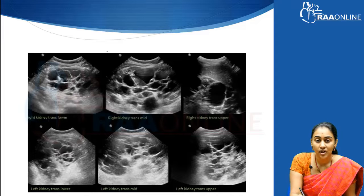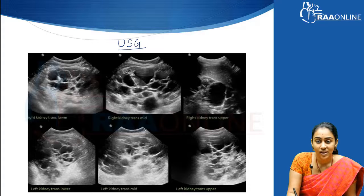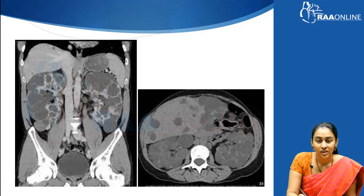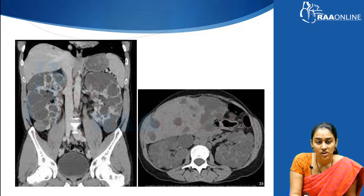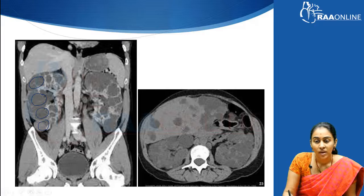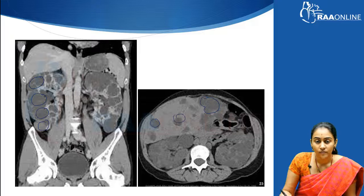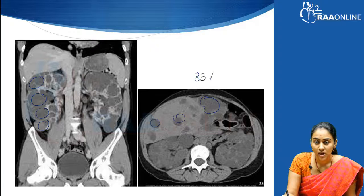This is the ultrasound appearance of a patient with polycystic kidney disease — we can see all these cysts which look like clusters of grapes on the images. This CT imaging shows bilaterally enlarged kidneys studded with cysts everywhere. We are also able to appreciate the presence of liver cysts accompanying the renal cysts. Up to 83% of patients with polycystic kidney disease can have liver cysts.